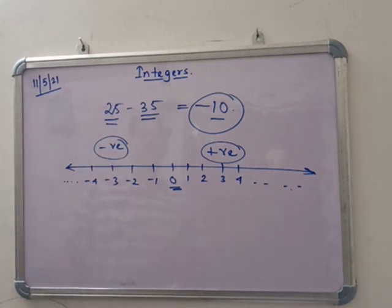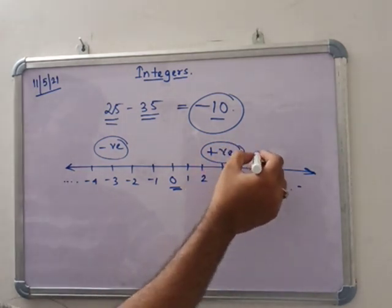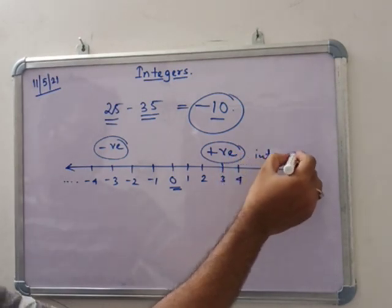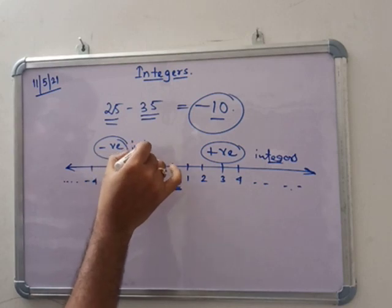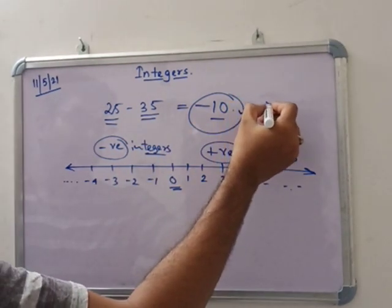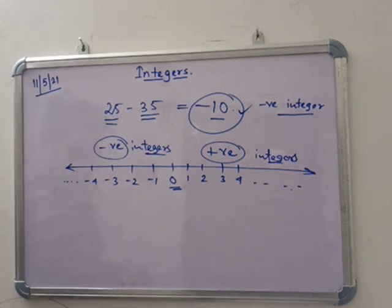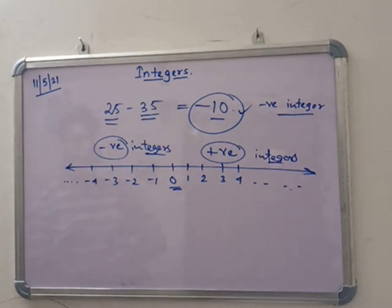Along with 0, all these numbers — whatever you think, any number, minus or plus — this is called an integer. So these are called positive integers, and these are called negative integers. So minus 10 is a negative integer. Positive integer is also called non-negative integer, and negative integer is also called non-positive integer.